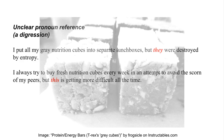While we're on the subject of pronouns, unclear pronoun reference is another common source of ambiguity. Look at these two sentences: "I put all my gray nutrition cubes into separate lunchboxes, but they were destroyed by entropy." In the first sentence, what is "they" referring to? It could be the nutrition cubes, or it could be the lunchboxes. There's no way to tell for sure. The pronoun's antecedent — the word it points back to — is not clear.